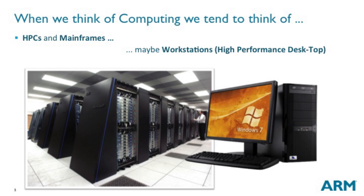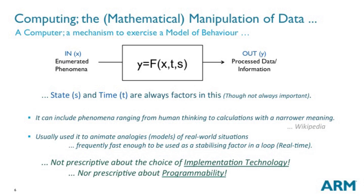We're going to go back to computing a little bit, because generally we also make big mistakes in the computing domain — and we make them because of misunderstandings. We're so used to using terms that we seldom understand what they mean; we just use them as shorthand. Computing is just an implicit mathematical model — a belief that mathematics has some value. It's an ability to take an abstracted input phenomena, process it, and draw some conclusions from the outside. It's a model.